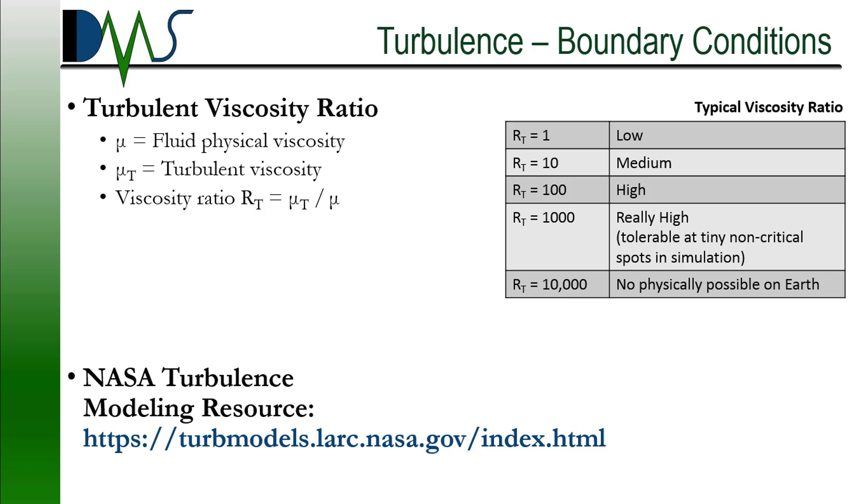So the first way we normally classify it is with the turbulent viscosity ratio. You've got your normal fluid viscosity, and then we have our turbulent viscosity, and we will look at the ratio of those two. And that ratio is one of the first things that we'll look at specifying for a boundary condition. If you're looking for reasonable values, I highly recommend the NASA Turbulence Modeling Resource. There is a link at the bottom of the screen. I will also put it in the description for the video. Loads of information there, an excellent resource. But if you also look at the table on the right side of the screen here, this will give you some typical values for the turbulent viscosity ratio that you can use.